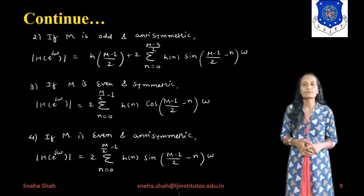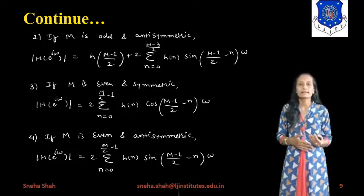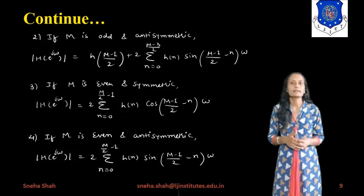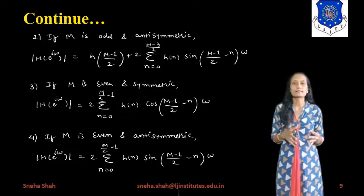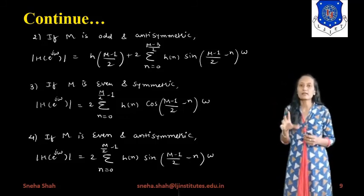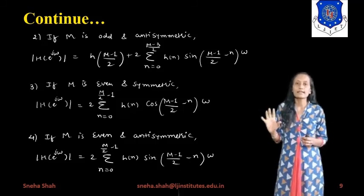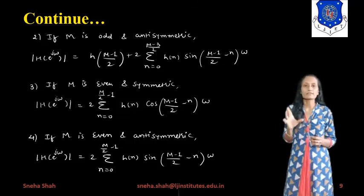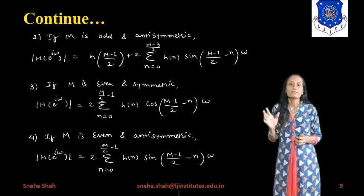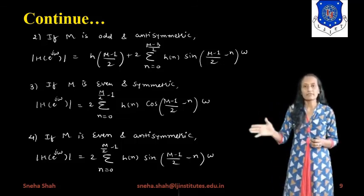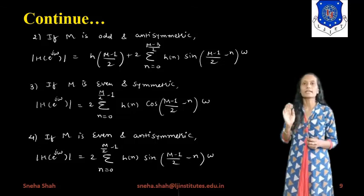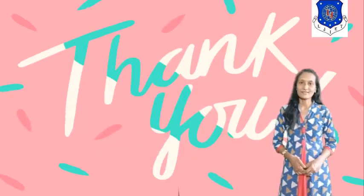In the next session I will explain the structures for the linear time invariant system. We will take different kinds of structures to represent the system and reduce system complexity by directly designing different structures derived from the linear constant coefficient difference equation — including direct form, cascade form, and parallel form, for both FIR (finite impulse response) and IIR (infinite impulse response) systems. Thank you so much.